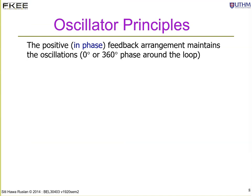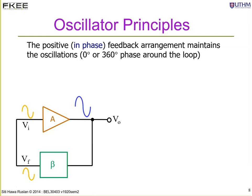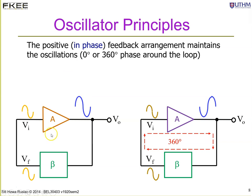The feedback oscillator uses positive feedback, and we have talked about the Barkhausen criteria. For a non-inverting amplifier, the input must be in phase — it is amplified and attenuated by beta. For an inverting amplifier, the output is out of phase, so the total phase shift around the loop must be 360 degrees.